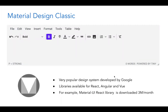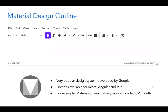Next, we have a couple of different skins inspired by the material design system from Google. Material design libraries are available for React, Angular, and Vue — very popular and only growing in popularity. For instance, the React library for material design gets downloaded about 3 million times a month. We have a couple of different flavors: here we have the classic view, and we've also provided an outline view.